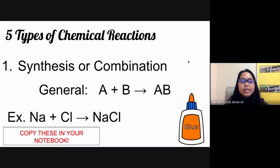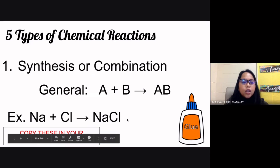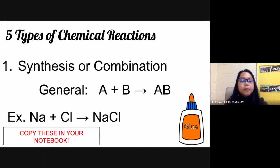The first type is called synthesis or combination. The general formula is A + B → AB. Simply stated, this is the combination of two substances to form one compound. For example, sodium and chlorine combine to give you sodium chloride.